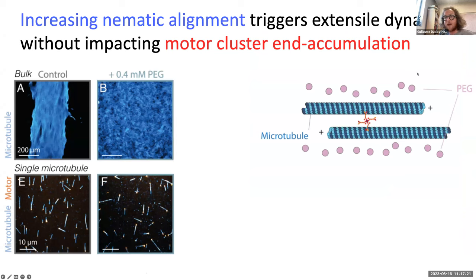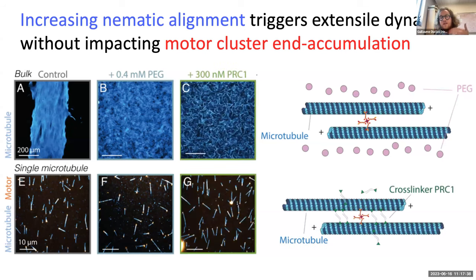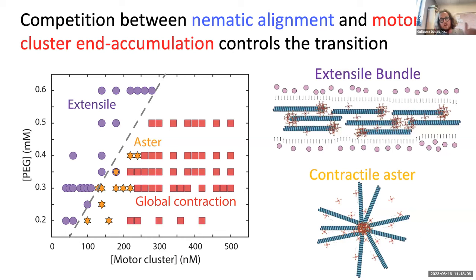Even with lots of motor caps, if PEG induces alignment of microtubules, we get extensile dynamics. This is very generic: using a microtubule-specific cross-linker like PRC1 to increase nematic alignment — without impacting motor end-accumulation — also produces extensile flows instead of contractile asters. We built a phase diagram with PEG concentration on the Y-axis and motor concentration on the X-axis, showing it's really a competition between nematic alignment and motor end-accumulation that controls the transition from extensile bundles to contractile asters. The phase boundary appears linear between those two states.